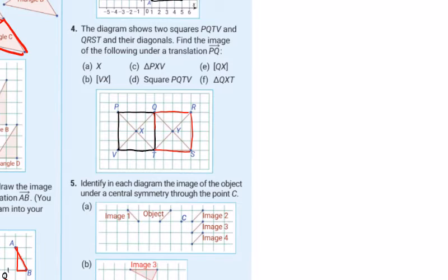Find the image of the following under the translation PQ. So what's happening with P to Q? P to Q is just directly across four. So X, these are all just goes... X goes across four, goes to Y. So we can scrub that, put my Y in.